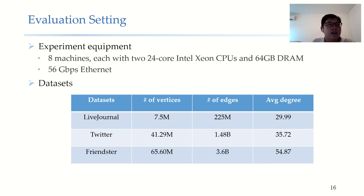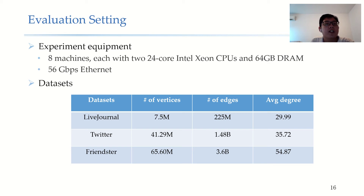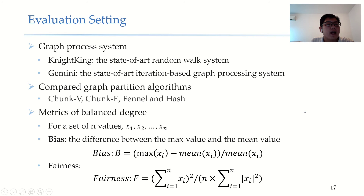Our algorithm is called BPART. We now present experiments showing its efficiency. We use a cluster of eight machines equipped with 56 Gbps interconnect, 24-core CPUs, and 64 GB DRAM each. We use three real-world datasets: LiveJournal, Twitter, and Friendster. We use Niko and Gemini as code bases and replace the partition module with different graph partition algorithms: chunkV, chunkE, Fennel, Hash, and BPART.